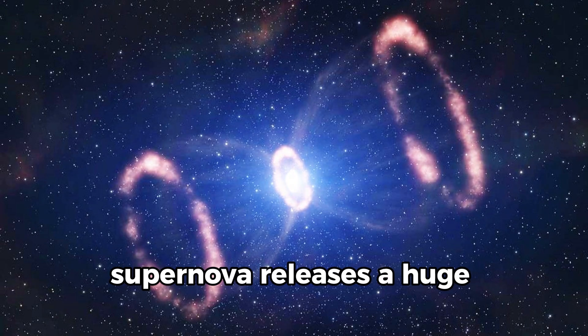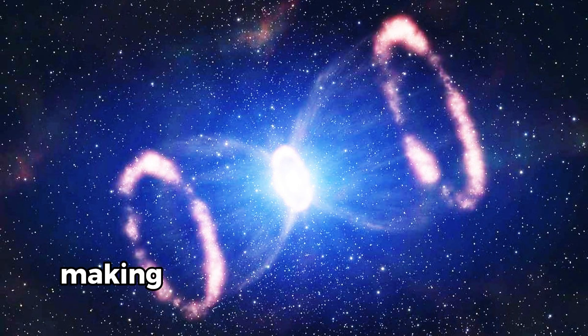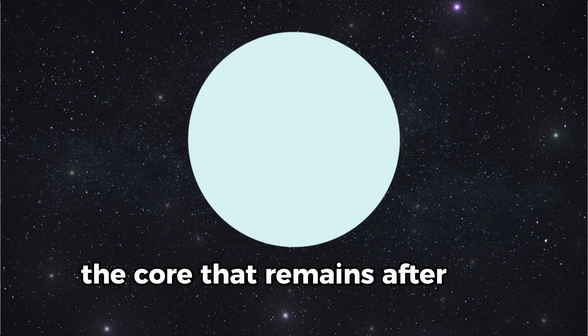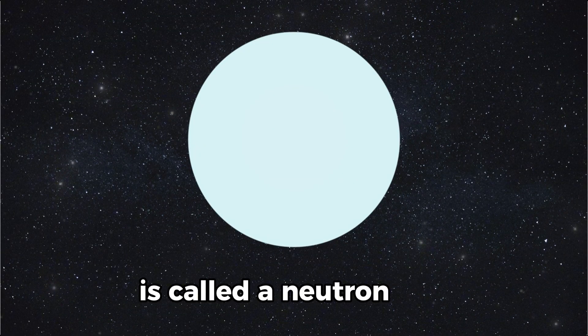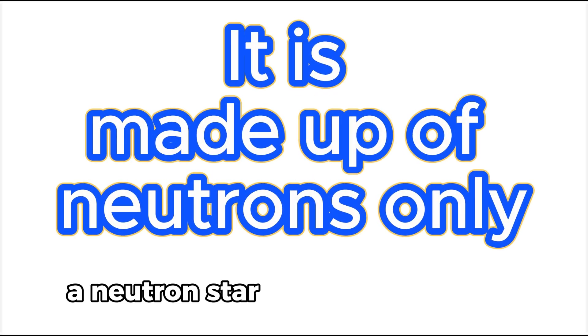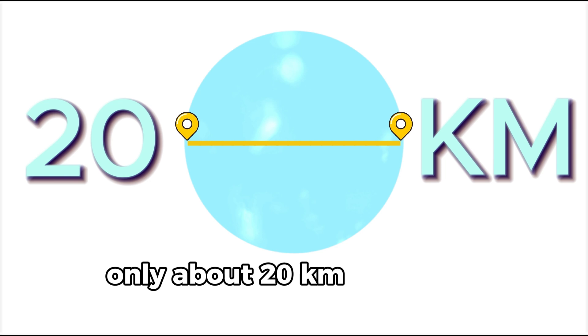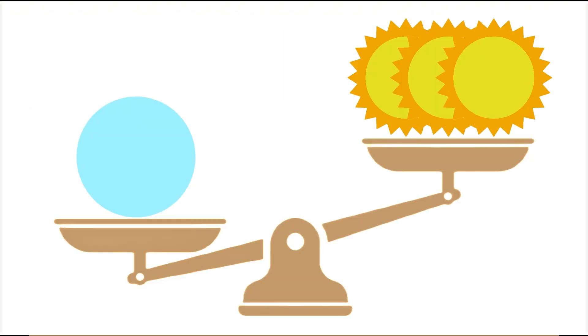A supernova releases a huge amount of energy and light, making it shine much brighter for a short time. The core that remains after the explosion is called a neutron star. A neutron star is incredibly dense. It is very small, only about 20 kilometers wide, but weighs more than our sun.